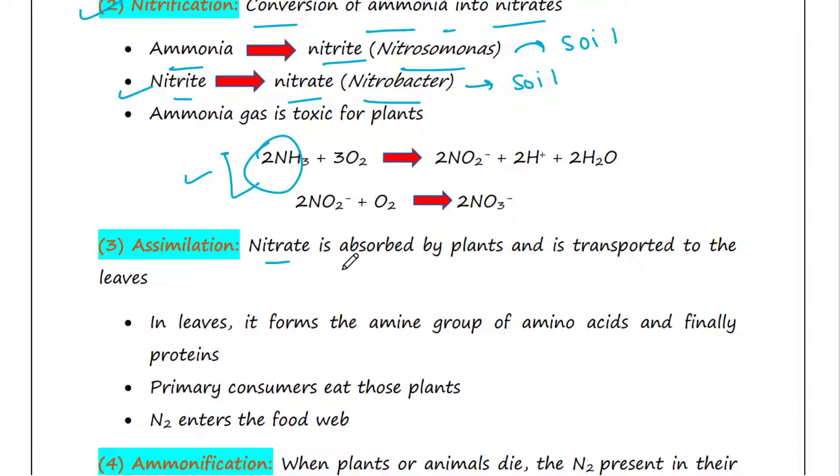This conversion is actually crucial since ammonia gas is toxic for plants. The next process is assimilation. The nitrate which is formed is absorbed by plants and transported to the leaves. In leaves, it forms the amine group of amino acids and finally proteins. Primary consumers eat those plants, and in this way nitrogen enters the food web.